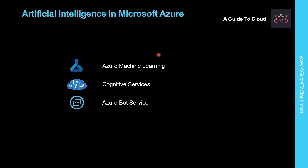Let's have a look at some of the key AI-related services in Azure. We will go into detail about these topics in the coming videos. The first one is Azure Machine Learning — a platform for training, deploying, and managing machine learning models. The second is Cognitive Services, a suite of services developers can use to build AI solutions. And last but not least, Azure Bot Service, a cloud-based platform for developing and managing bots.